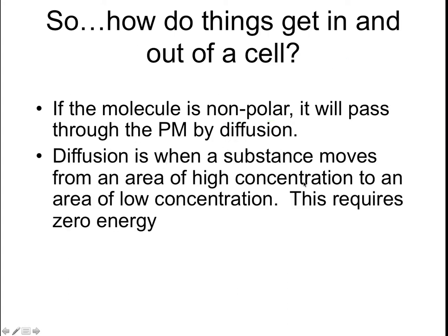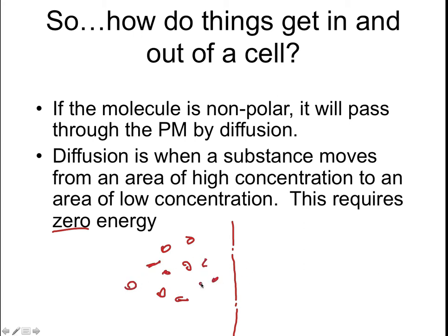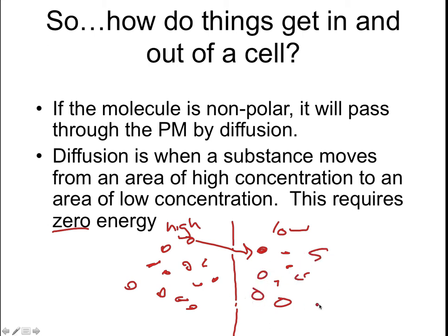Diffusion is when a substance moves from an area of high concentration to an area of low concentration. This requires no energy in any way, shape, or form. So let's say we have some form of membrane here. On this side, we have a whole bunch of whatever molecule it is, and on this side, we have very little. Now we have a concentration gradient — areas of different solutes. We are going to diffuse from an area of high concentration until the concentration sizes are equal.